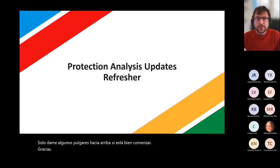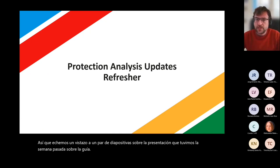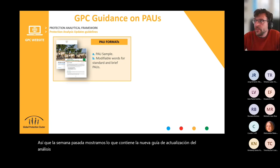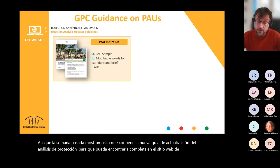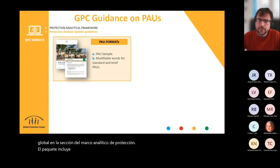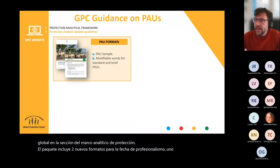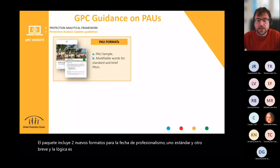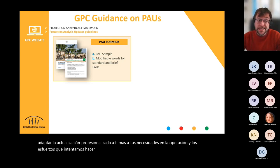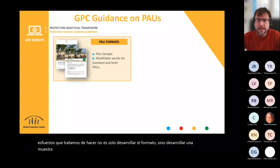Let's have a look at a couple of slides from last week's presentation to situate ourselves for today's webinar. Last week we showed what the protection analysis update — the new guidance — contains. You can find all of it on the Global Protection Cluster website in the section of the protection analytical framework. The package includes two new formats for the protection analysis update: one standard and one brief, with a much more flexible approach so you can adapt it more to your operational needs. We also developed a sample analysis to give you something that can inspire how the analysis should be shaped in the PAU.